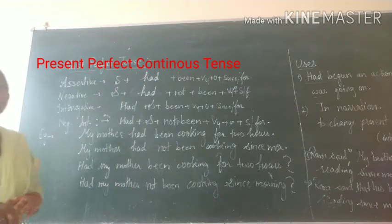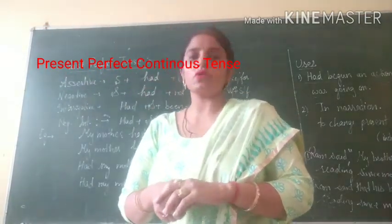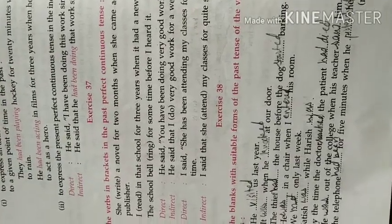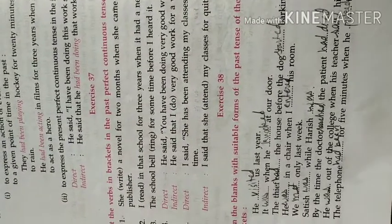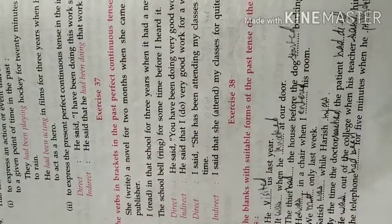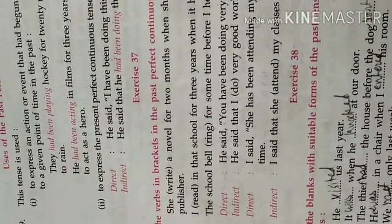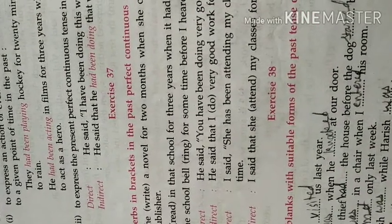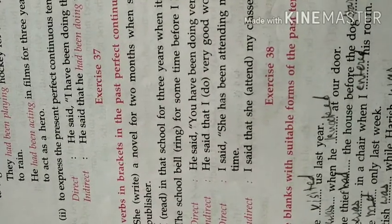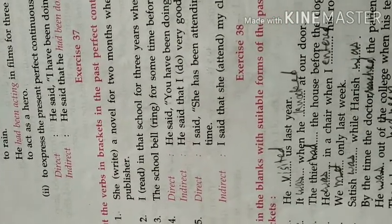Now it's all about past perfect continuous tense. Watch the video twice or thrice and try to solve Exercise 37, which is based on past perfect continuous tense. For example: 'She had been planning her novel for 2 months when she came across a publisher.' Here the helping verb 'had' is used with all subjects, then 'been', then the present participle — 'she had been writing a novel.'